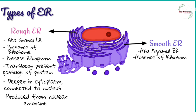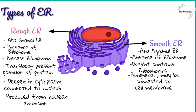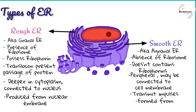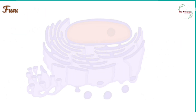Smooth endoplasmic reticulum, also known as agranular endoplasmic reticulum, has a smooth surface due to the absence of ribosomes. It does not contain ribophorins. It is peripheral and may be connected to the plasma membrane. It may transmit impulses from outside to the cell interior and can be formed from rough endoplasmic reticulum.